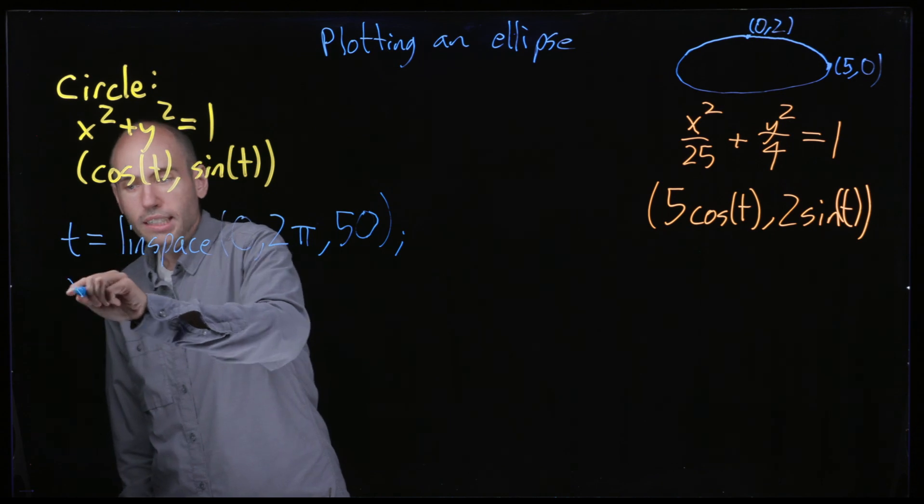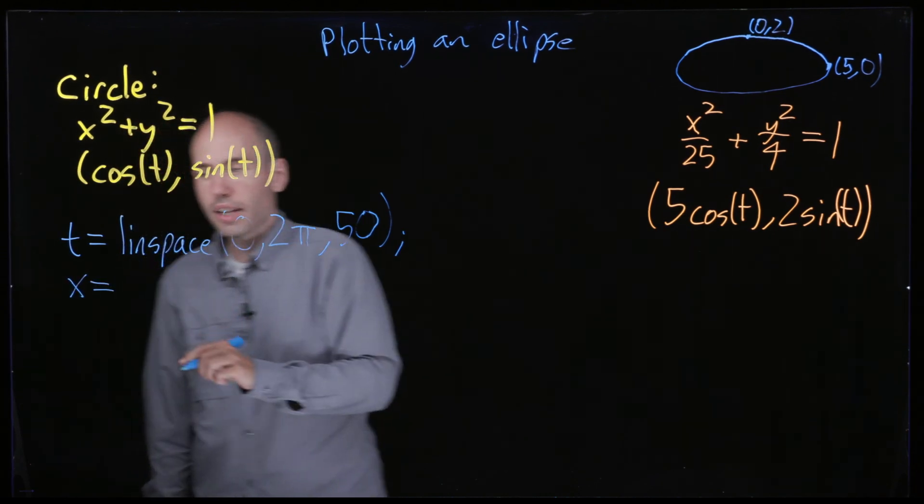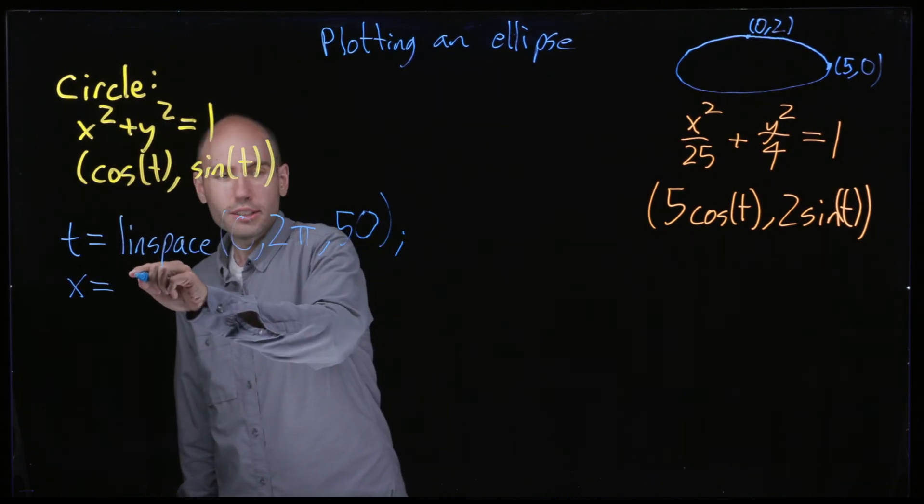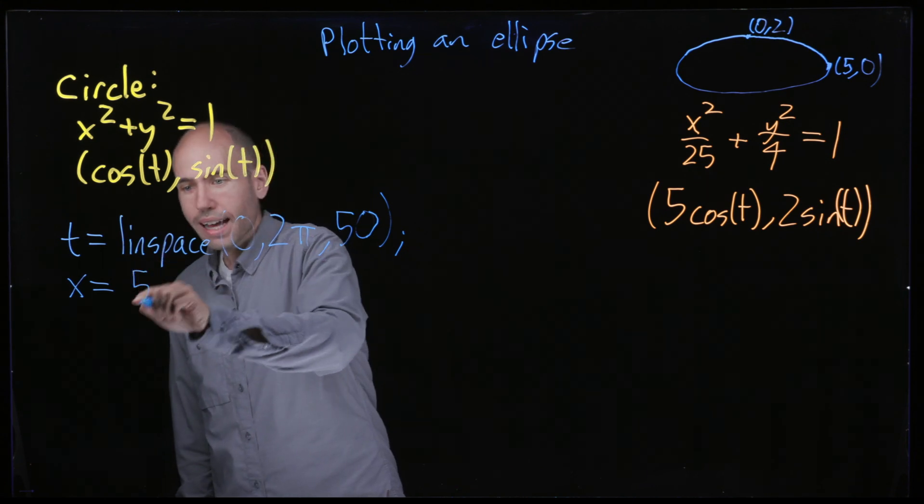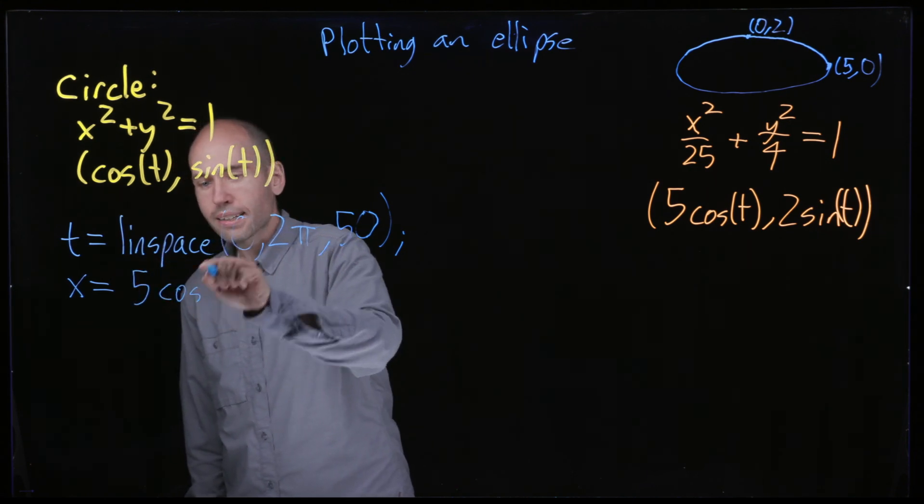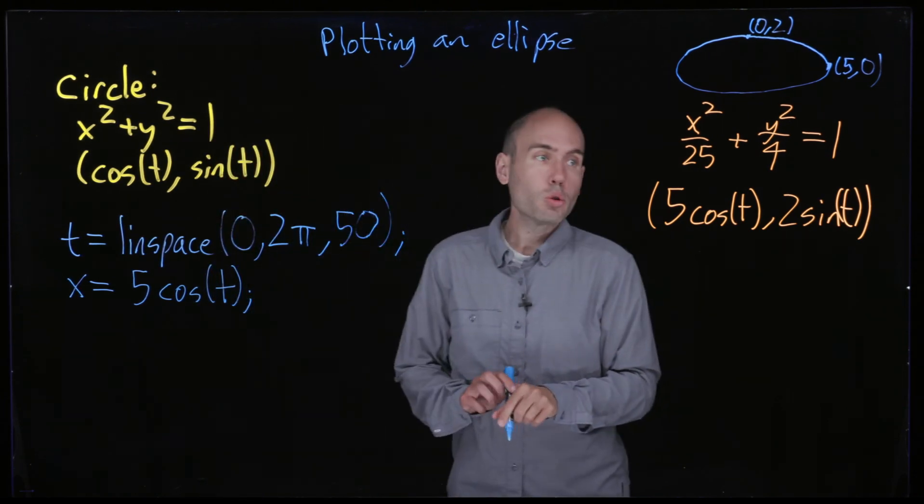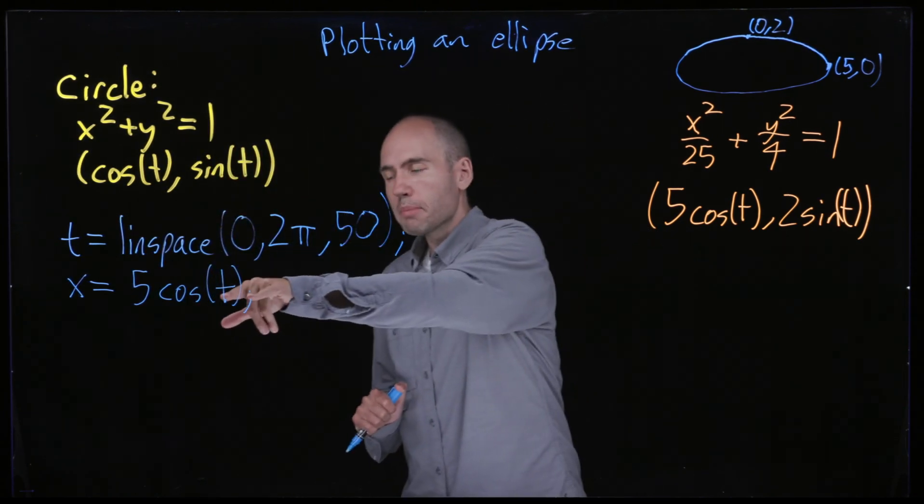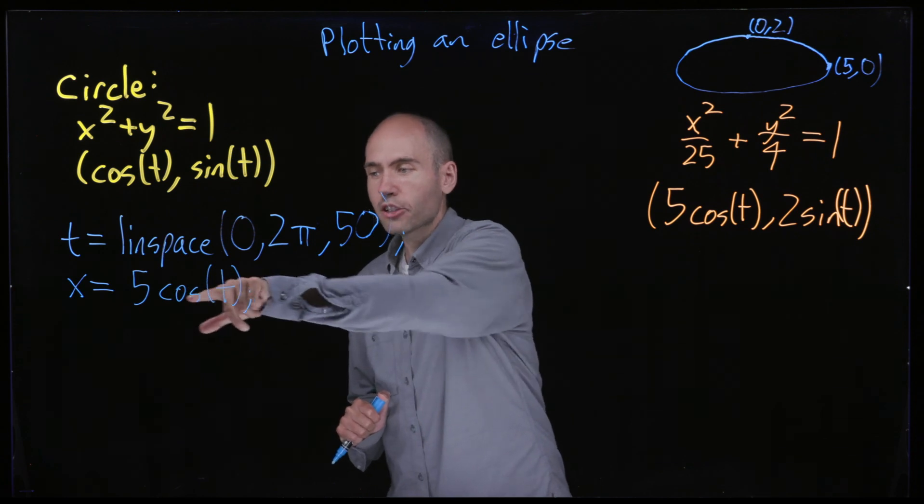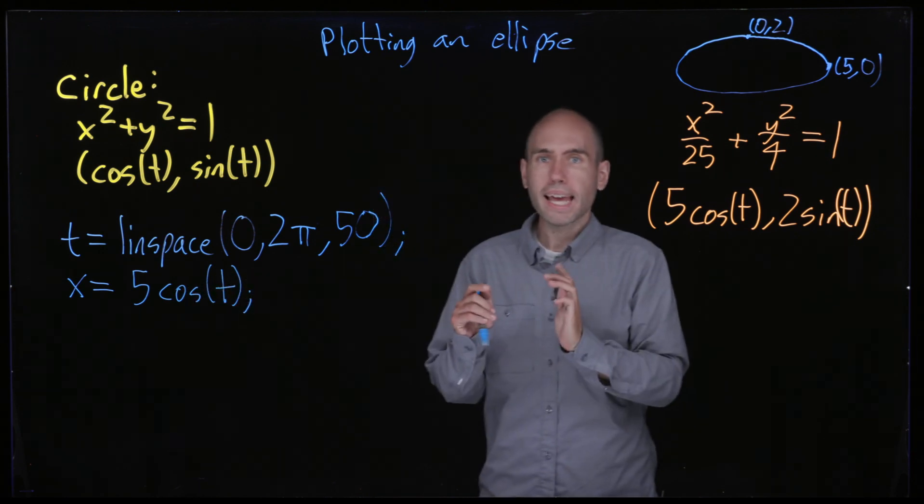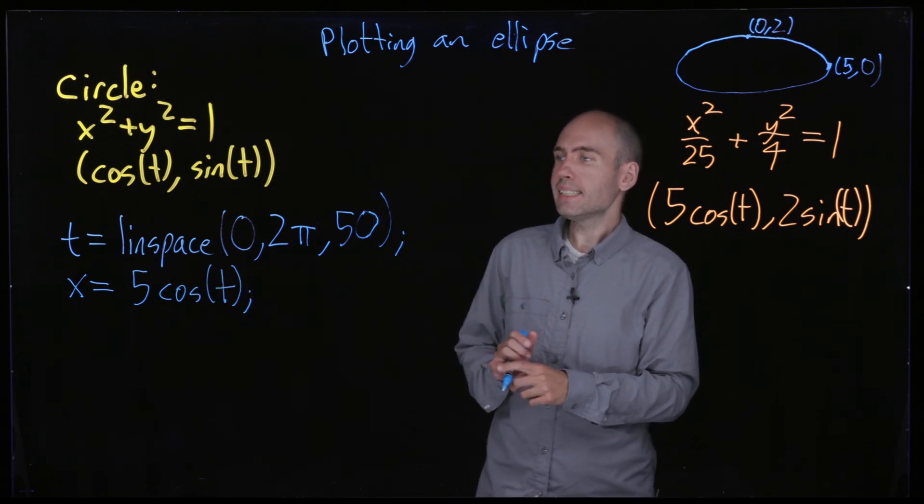And so that's not part of the ellipse, that's telling me about the sample points. Now I want to know what are the x coordinates going to be. So they're going to be x equals 5 times cosine of t. And you would be right to worry, does it really make sense to plug a vector into cosine?